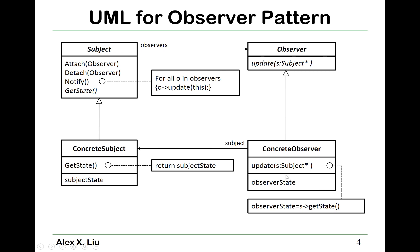Different concrete observers may implement this update function differently — they may go to the concrete subject and retrieve different information. That is why we keep update in the base class observer as a pure virtual function, and then in the concrete observer we provide a concrete implementation of this update function.